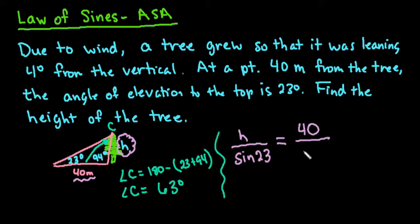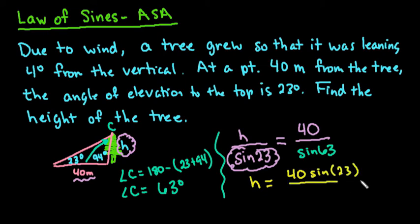So now what we would do is set up our sine of 63 in the denominator. Now all we have to do is multiply both sides by sine 23 to get it to the other side. Let me grab a different color. So I can say that h is equal to 40 times sine of 23 degrees over sine of 63 degrees. And now we just simply have to plug that into a calculator.